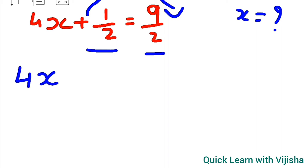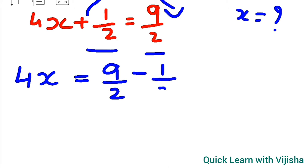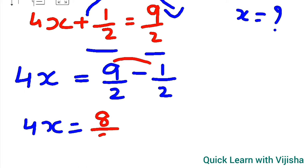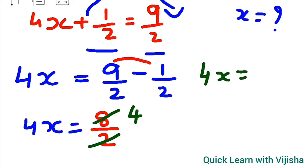We write 4x is equal to 9 upon 2, and we have taken 1 upon 2 to the right hand side. The denominators are the same so we can subtract directly — 9 minus 1 gives 8, and the denominator is 2. We can cancel: 2 fours give 8, so 4x is equal to 4.